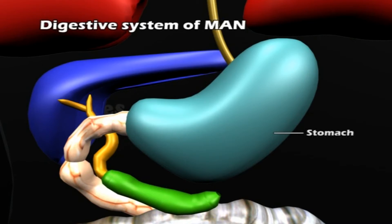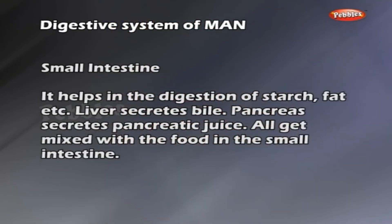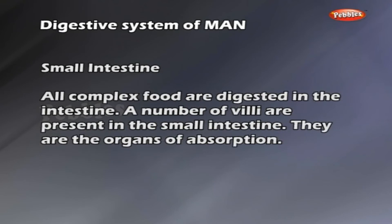The anterior portion of the stomach is the continuation of the esophagus. The stomach opens into the small intestine, which is made up of duodenum, jejunum and ileum. The intestinal wall secretes intestinal juice, which helps in the digestion of starch, fats, etc. Liver secretes bile and the pancreas secretes pancreatic juice. These all mix with food in the small intestine. A number of villi are present in the small intestine as organs of absorption.